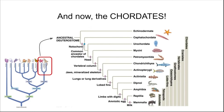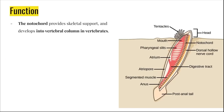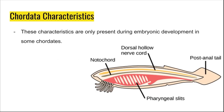The next group of deuterostomes we'll cover are the chordates. In this taxonomic tree, you can see that the chordates encompass mammals, reptiles, amphibians, and several other groups that you're probably familiar with. The taxonomic tree on the right is a more detailed version of the one on the left. You can see that the outgroup are the echinoderms. What separates the chordates from the echinoderms is the presence of a notochord. The function of the notochord is to provide skeletal support, and in some vertebrates it develops into the vertebral column. Some characteristics of chordates are only present during embryonic development.